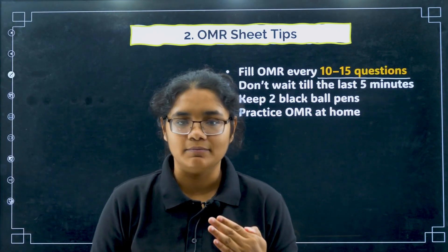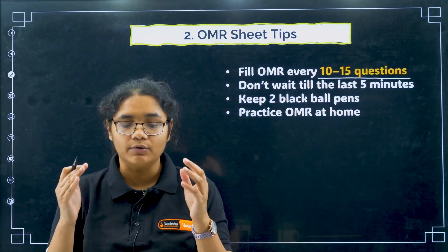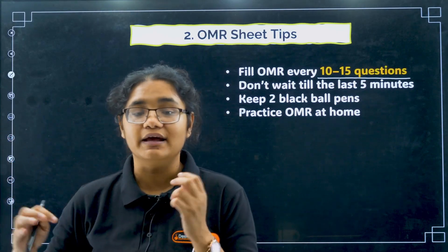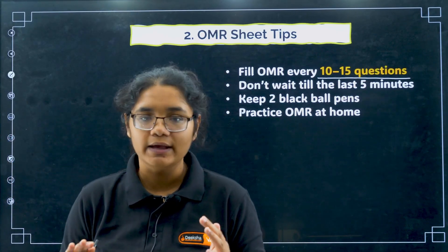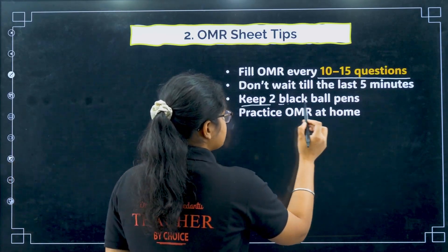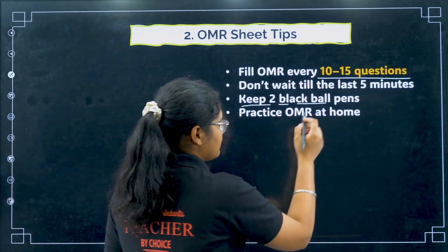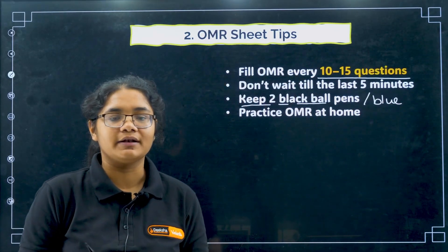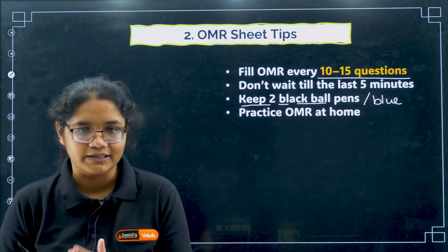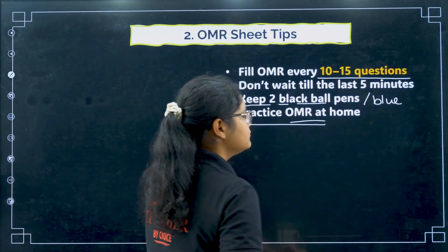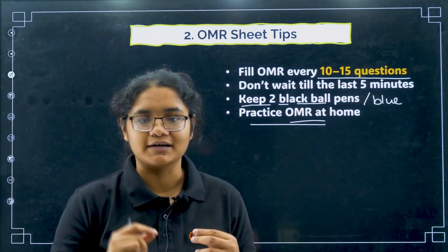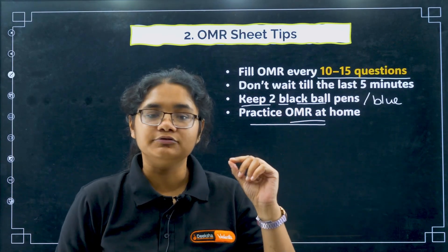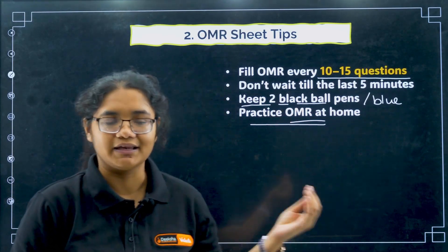Solve 10 to 15 questions, then bubble them, then repeat. This way you keep track and avoid a last-minute panic of bubbling everything in five minutes. Also, keep at least two black or blue ball pens so you have a backup in case the ink finishes. Lastly, practice filling the OMR at home today - spend about 10 to 15 minutes practicing how to shade the bubbles properly so the shade does not go outside the circle.